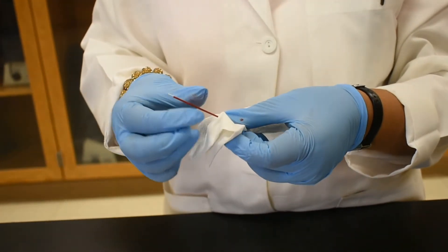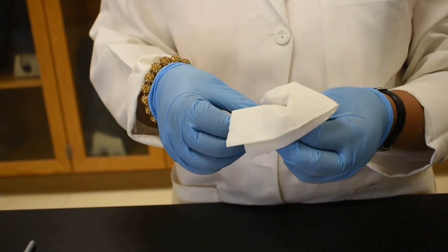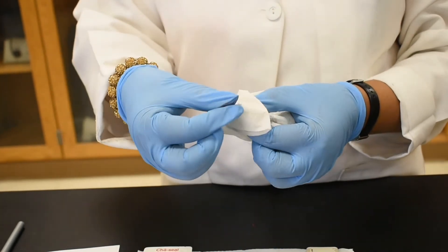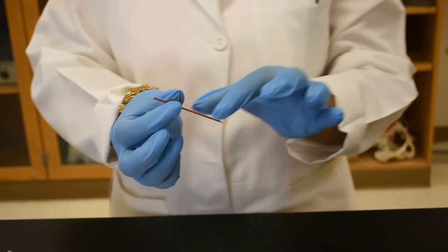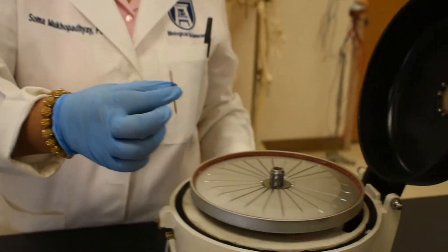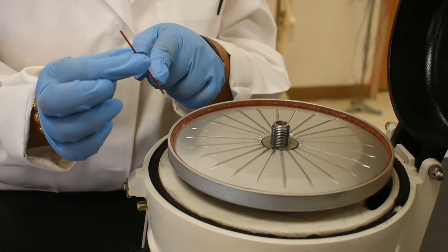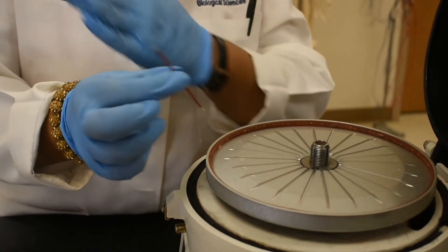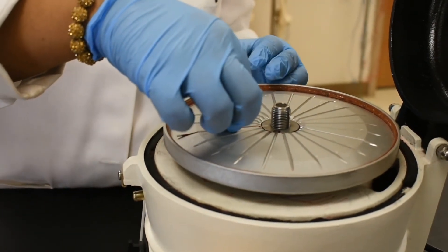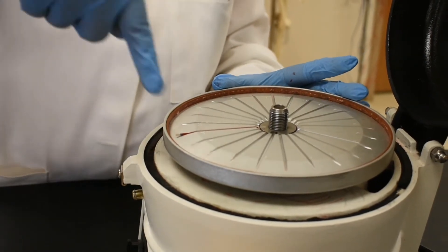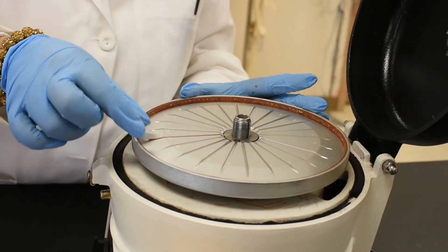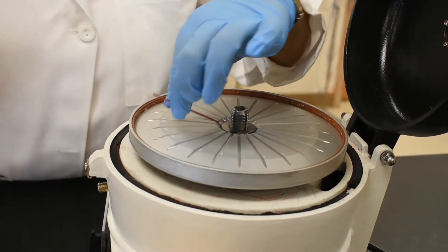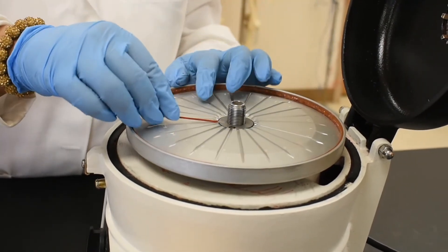Always make sure to wipe it thoroughly but gently because these are very thin capillaries. And now we will load the capillary tube in the centrifuge with the sealant side towards outside. Because when this is rotating, if you have the tube loaded in the reverse direction, all the blood sample will be spilled out of your tube.